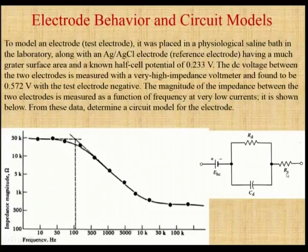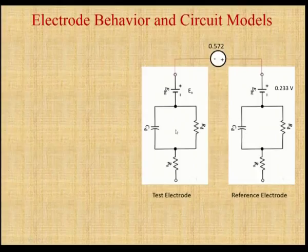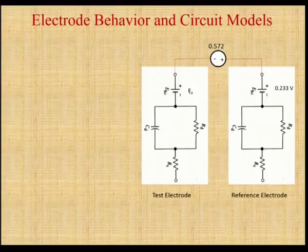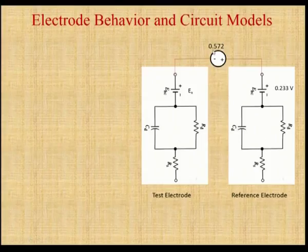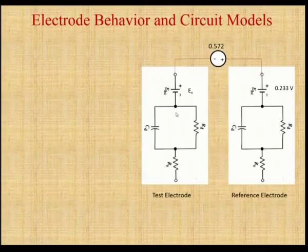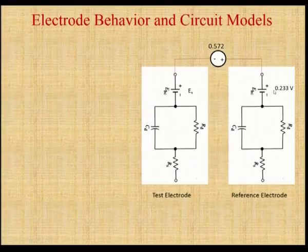RS gives the source resistance, and this is also the electrode behavior and circuit model. Here we have two electrodes — one acting as a test electrode and another as a reference electrode. A single electrode is a combination of two resistances and a single capacitor. The two electrodes are connected using a meter with a constant value of 0.572. The reference electrode, placed outside the electrolyte container, has a constant voltage value of 0.233 volts, which is the half cell potential value.